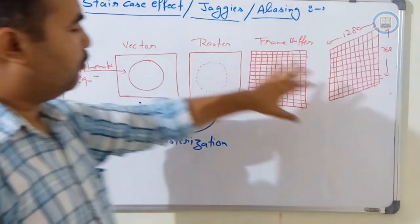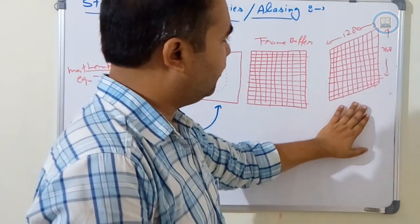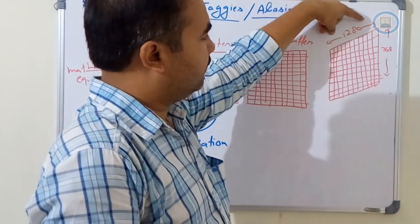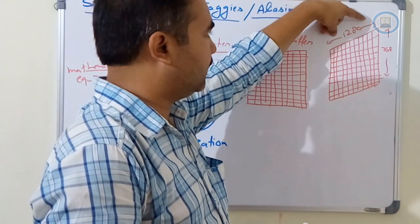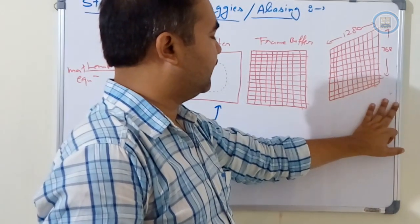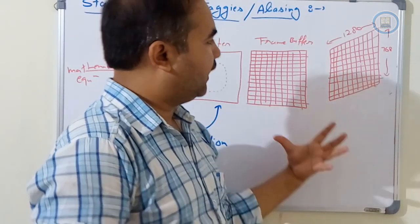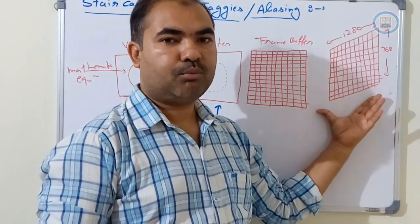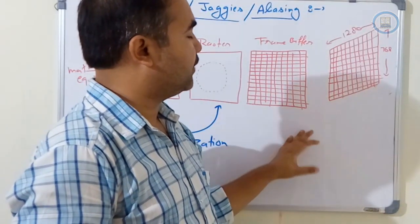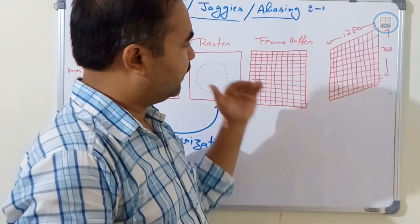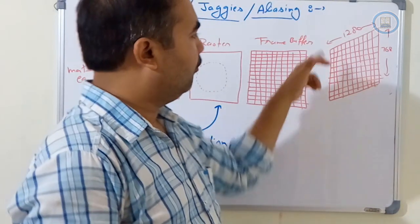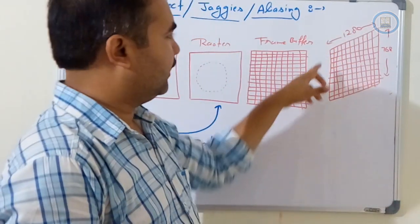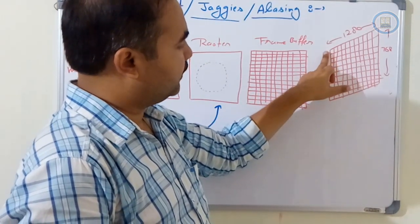In modern computer graphics, display devices are divided into pixels. For example, a screen may have 1280 pixels in the horizontal direction and 768 pixels in the vertical direction. Raster images are used to display content, where the electron gun scans from left to right and top to bottom, pixel by pixel. The pixel is the smallest unit of the picture on the computer screen.